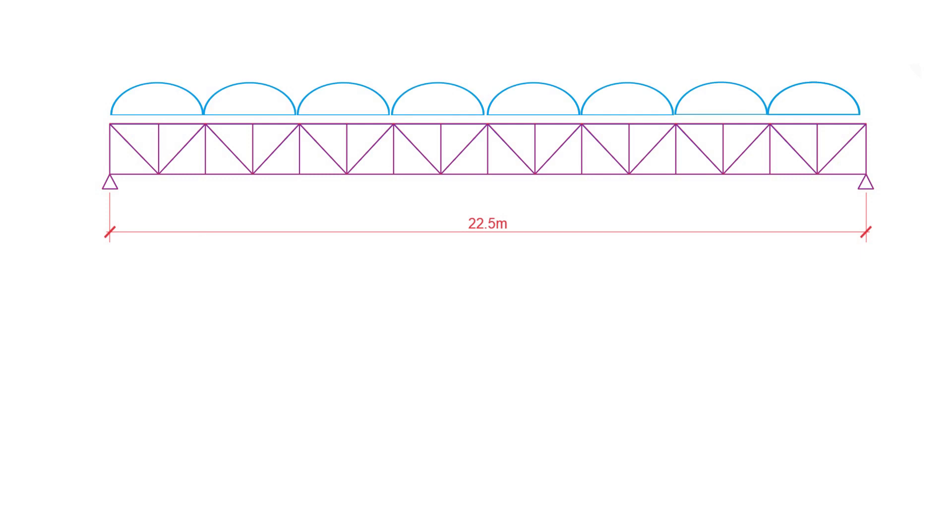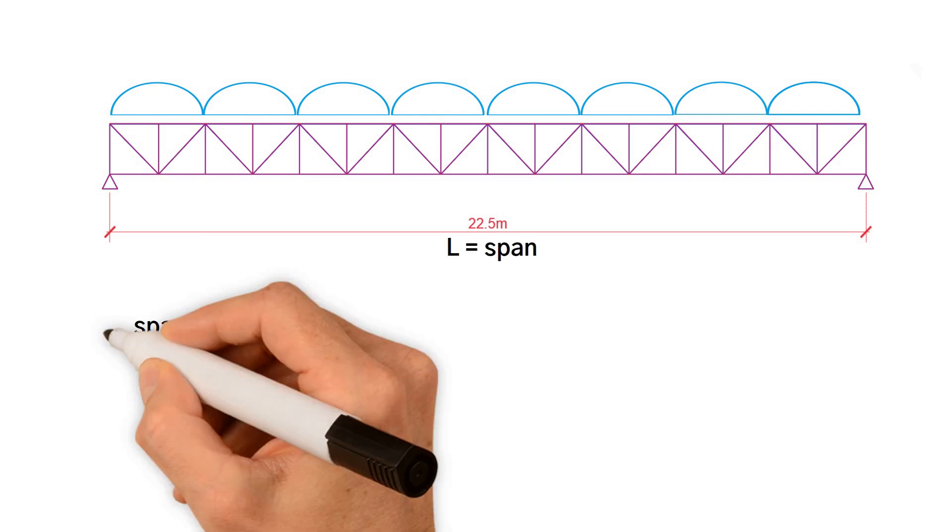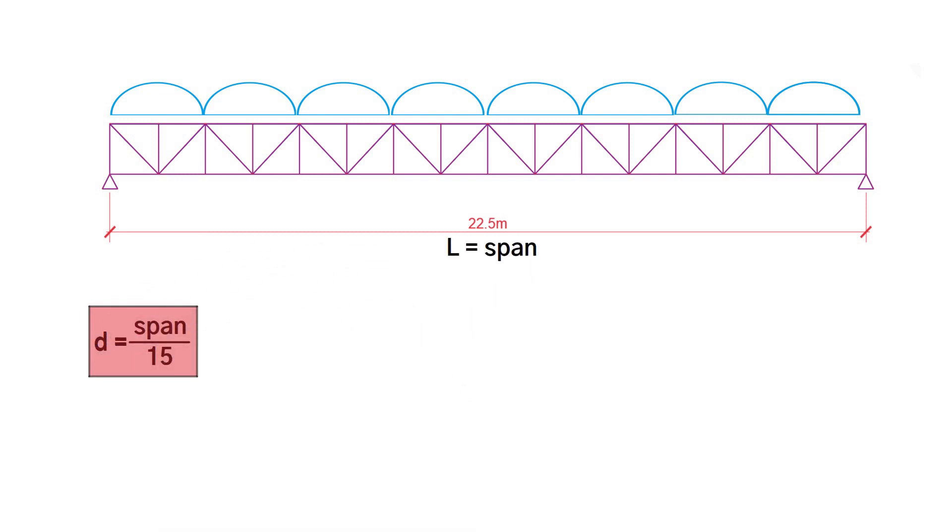If you're working out a preliminary size of a truss, what you want to look at is the span over 15. The first formula is that the depth equals the span over 15. That's just an approximate figure. 22.5 divided by 15 is 1.5 meters. That's the first formula you should remember.